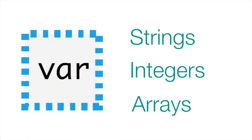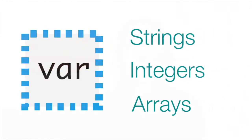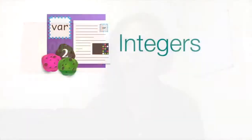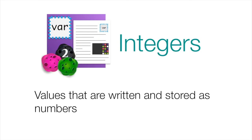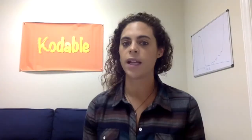Strings, integers, and arrays. We're going to talk about integers, which are whole numbers that can be positive, negative, or zero. In programming, integers are values that are written and stored as numbers and they're often called ints. Ints are used for two different reasons in programming: to store values and to run loops in our programs.